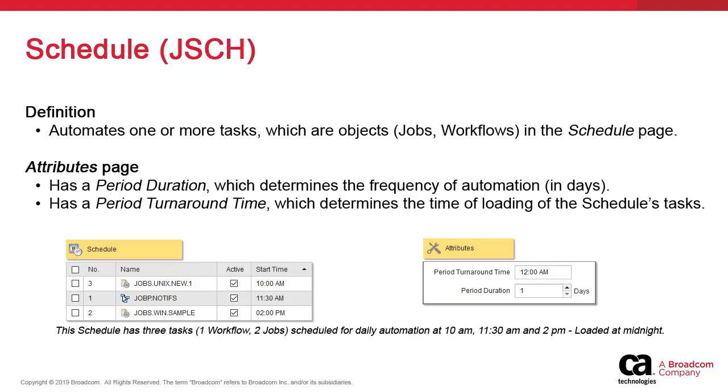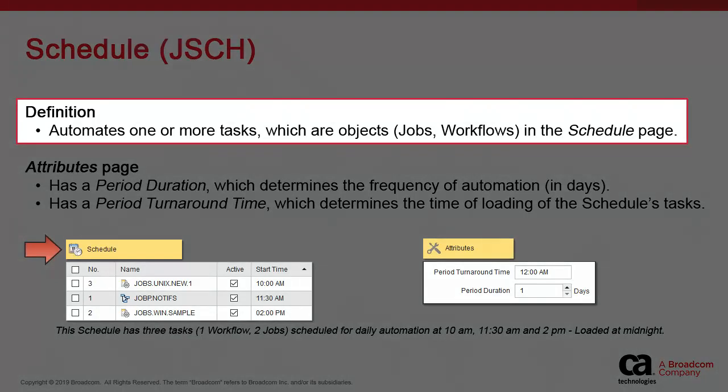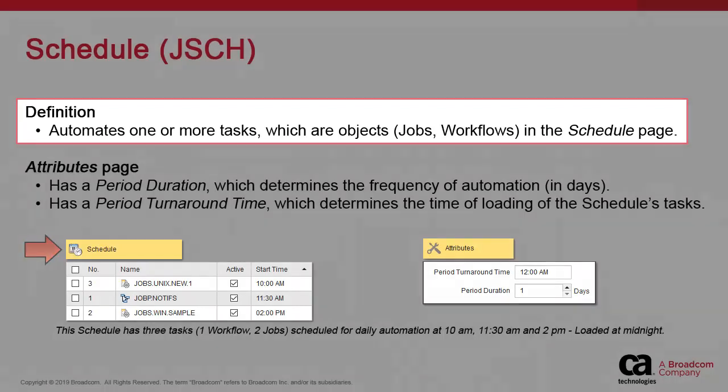The schedule is the core automation object. The object contains single-purpose objects like jobs, workflows, and file transfers. When we add these objects to the object's schedule page, they become automated tasks.